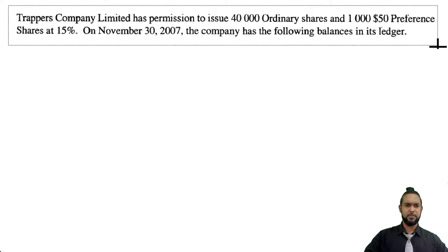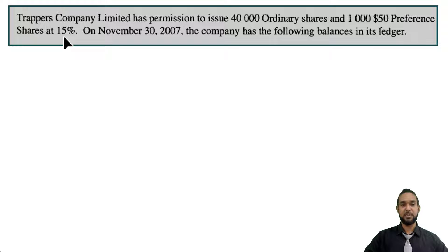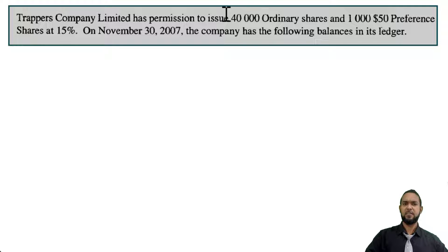We have some information here. Trapper's Company Limited has permission to issue 40,000 ordinary shares and $1,050 preference shares at 15%. So that's the authorized share capital. 15% is the dividend rate for the preference shares and the $50 is the par value for the preference shares. We aren't given any information about the par value for the ordinary shares, but let's read on.